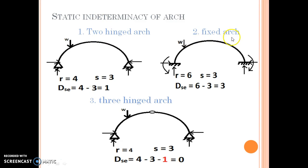Second is fixed arch, in which two fixed supports are provided at the ends. At each fixed support, three reactions are developed - one is horizontal, another is vertical, and other is moment. So total number of external reactions is 6, total number of equilibrium equations is 3. External static indeterminacy of fixed arch is 6 minus 3 equals 3. That means it is statically indeterminate of degree 3.